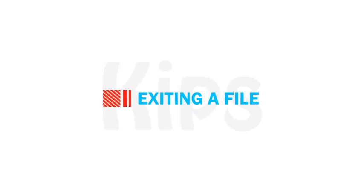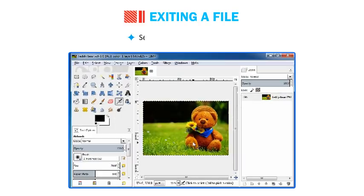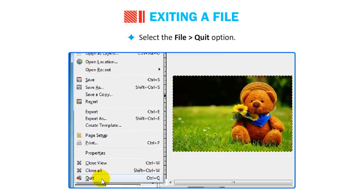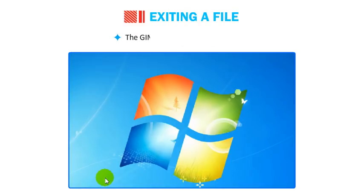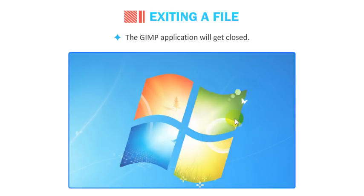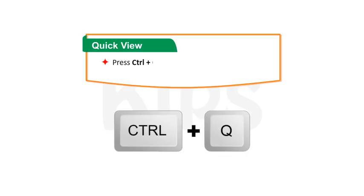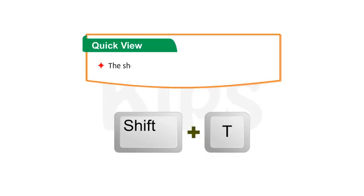To exit GIMP, select File then Quit. The GIMP application will close. You can also press Ctrl+Q to close the GIMP application window. The shortcut key to open the Scale Tool is Shift+T.